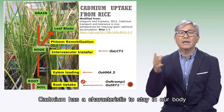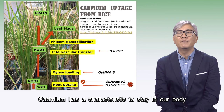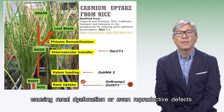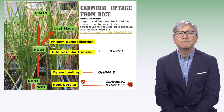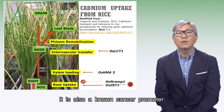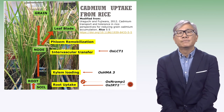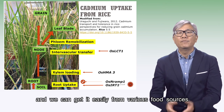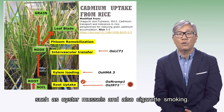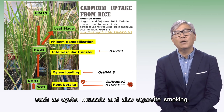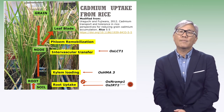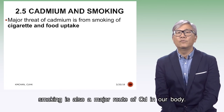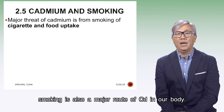Cadmium has the characteristic to stay in our body with a long half-life of three decades, causing renal dysfunction and even reproductive defects. It is also a lung cancer promoter. Cadmium stays in the environment and we can get it easily from various food sources such as oyster, muscle, and also cigarette smoking. Other than rice, smoking is also a major route of cadmium intake in our body.